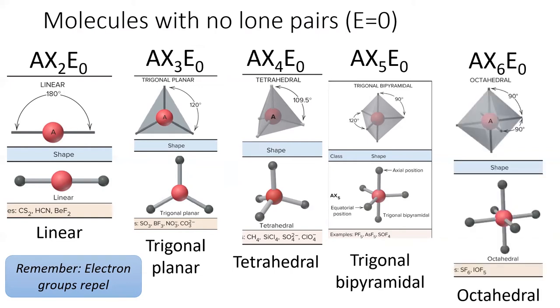When six atoms are bonded to the central atom, their geometry is octahedral. It's like if two four-sided pyramids were stuck together. Every bond angle is 90 degrees.